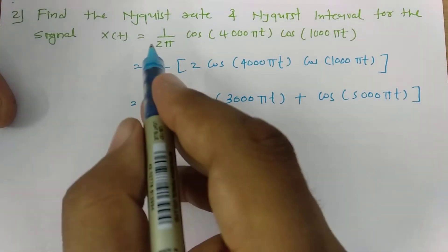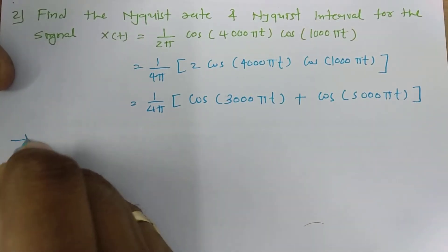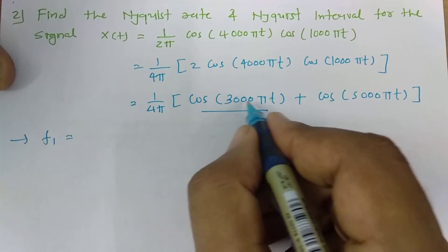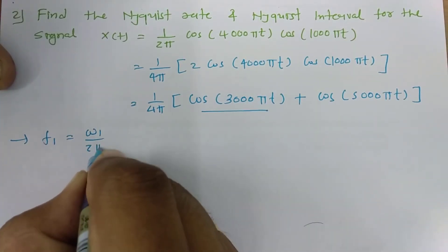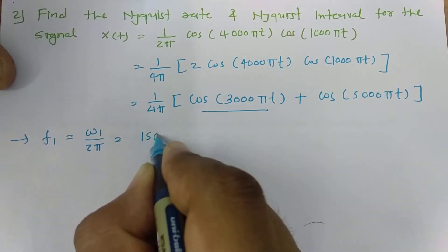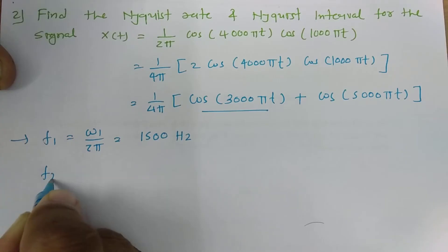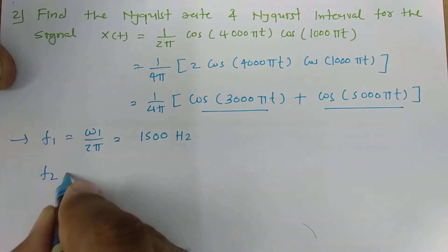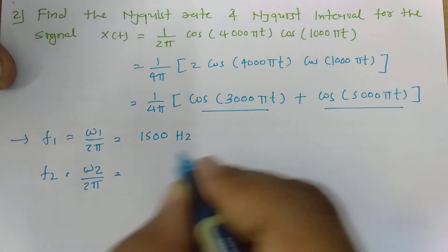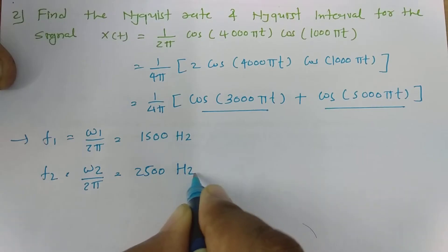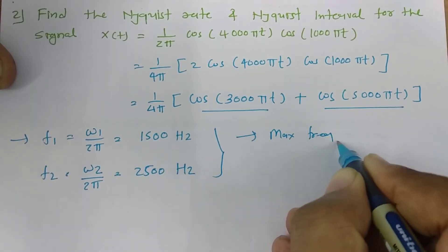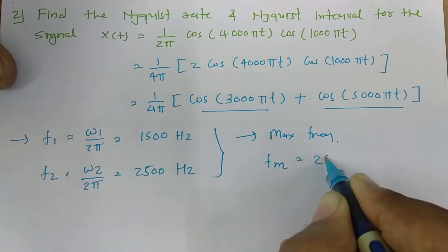Now we have the signal in terms of its frequency components. The first frequency is f₁ = ω₁ / 2π = 3000π / 2π = 1500 Hz. The second frequency is f₂ = ω₂ / 2π = 5000π / 2π = 2500 Hz. The maximum frequency is fₘ = 2500 Hz.